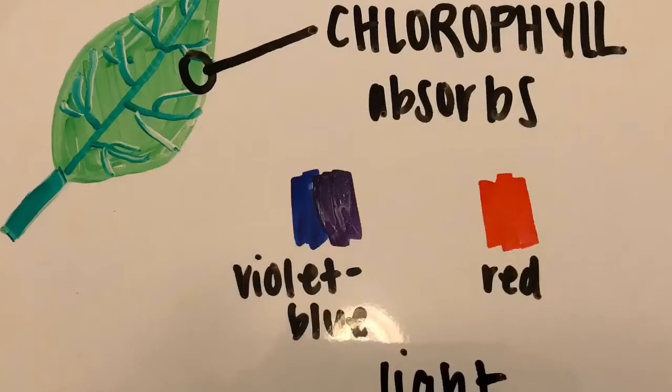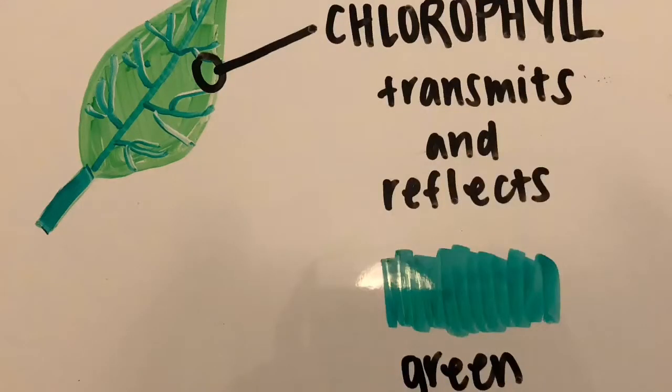For this reason, we see leaves as green due to the chlorophyll in plants absorbing violet blue and red light while transmitting and reflecting green light.